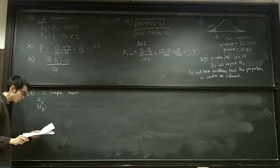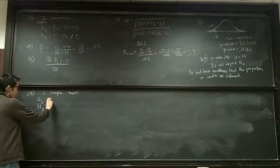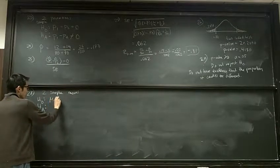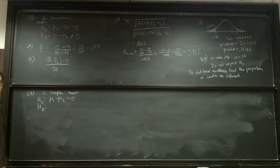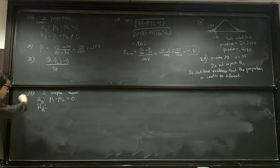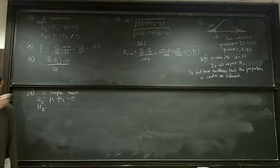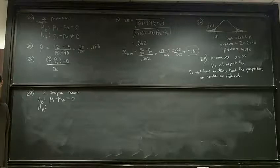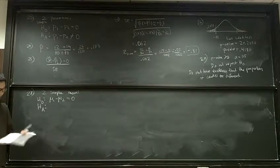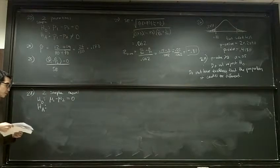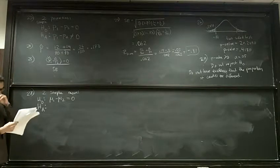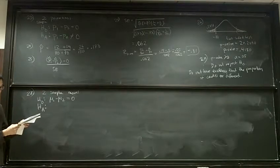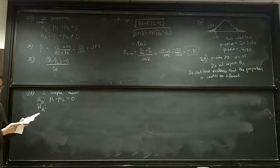So group one minus, so our null hypothesis is going to be mu one minus mu two equal to zero. Okay? Whenever you're doing two sample means hypothesis test, that's always going to be your null hypothesis. Okay? Well, what's the alternative? We want to know if drinking caffeine improves reaction time. Okay? So which group had the caffeine? Group one or group two? Group one. Group one had the caffeine.